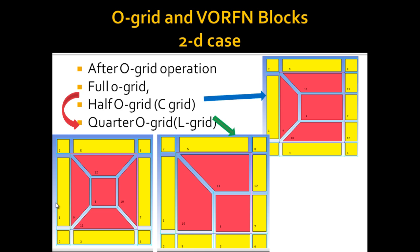There are three types of O-Grid: the first is the simple or full O-Grid, the second is the half O-Grid also known as C-Grid, and the third is the quarter O-Grid or L-Grid. In a full O-Grid, the mesh lines move from one side and meet again at the same point. In a C-Block, the mesh starts from one end, moves in a round shape, and goes through the other side without meeting. In the full O-Grid the Warframe block is not affected, while in the half O-Grid the Warframe block on the side where the half O-Grid is created is divided into three parts.